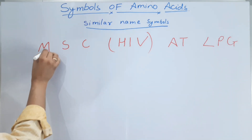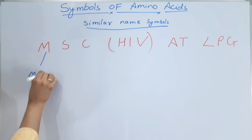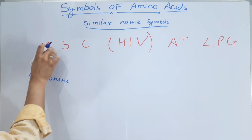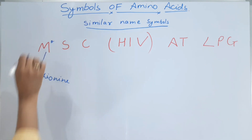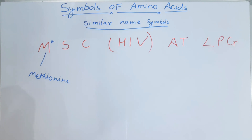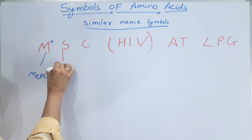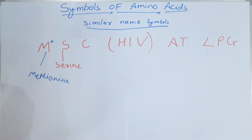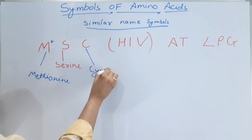Now let's decode it. M is the symbol for methionine. S is the symbol for serine. C is the symbol for cysteine.